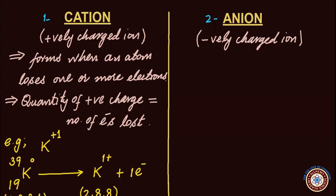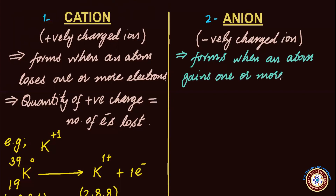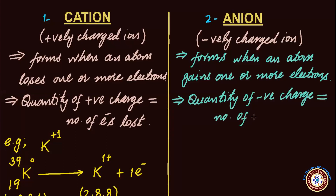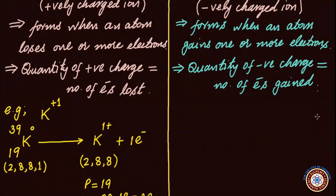Now let us work out the subatomic composition of anions. Since anions are negatively charged ions, they are formed when an atom gains one or more electrons. Non-metal atoms tend to gain electrons and form anions to achieve the nearest noble gas electronic configuration in their valence shells. The quantity of negative charge on an anion equals the number of electrons gained by the parent atom.